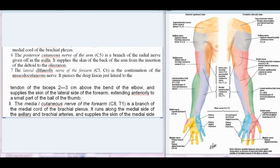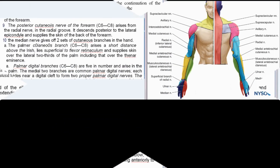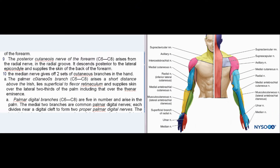The medial cutaneous nerve of the forearm runs along the medial side of the axillary and brachial arteries and supplies the skin of the medial side of the forearm. 9. The posterior cutaneous nerve of the forearm (C6–C8) arises from the radial nerve in the radial groove, descends posterior to the lateral epicondyle, and supplies the skin of the back of the forearm.